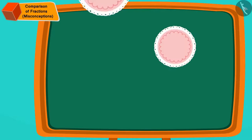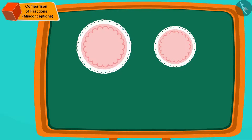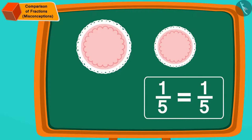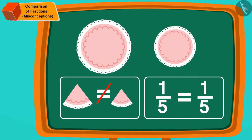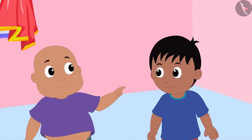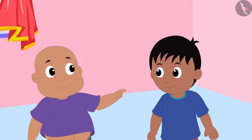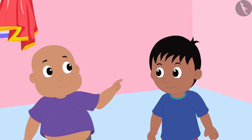Children, remember that even if the fractions of the parts of two objects are the same, but if the quantity of those objects is not equal, then those parts will not be equal. When Bablu explained this to Raju, Raju jumped with joy that he got more cake than Bablu.